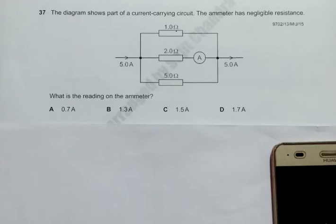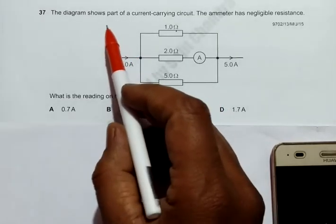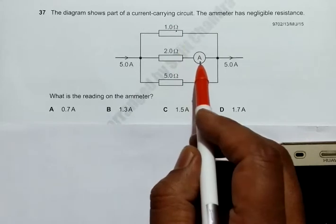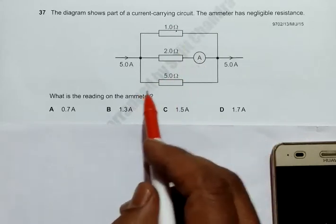This is question 37 from May/June 2015 Paper 13. The diagram shows part of a current-carrying circuit. The ammeter given has negligible resistance. It's actually an arrangement